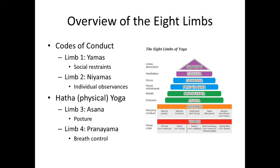The representation I'll use most this semester is a color-coded pyramid. The pyramid works because the base must be strong before you can build up to enlightenment, and the color-coding helps keep the parts straight. At the base are the codes of conduct: Limb one is the Yamas — social restraints, things we avoid for the betterment of all. Limb two is the Niyamas — individual observances, things done for the improvement of the unified self. These apply regardless of whether you pursue physical or mental yoga practice.